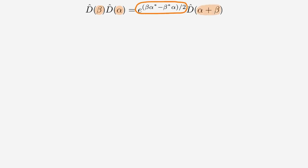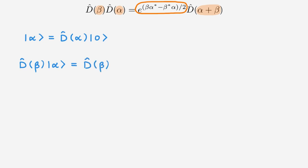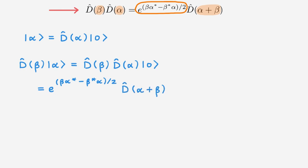We're now finally ready to understand the origin of the name displacement operator. Using the relation that D(α) D(β) equals a phase factor times D(α+β), consider a coherent state |α⟩ given by D(α) of the ground state. When we apply D(β) on this coherent state, we get D(β) times the coherent state in terms of D(α) and the ground state. Using our earlier relation, this becomes the phase factor times D(α+β) acting on the ground state.